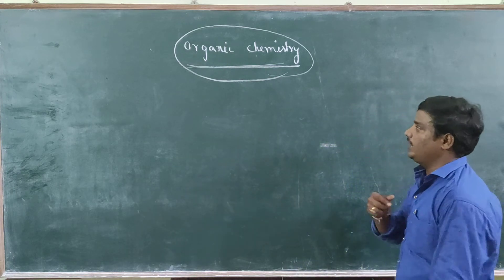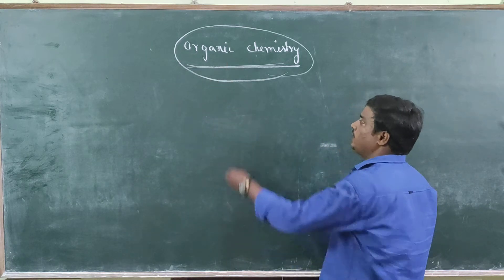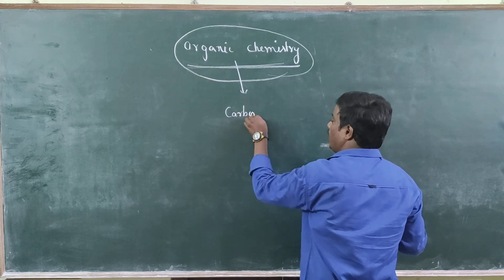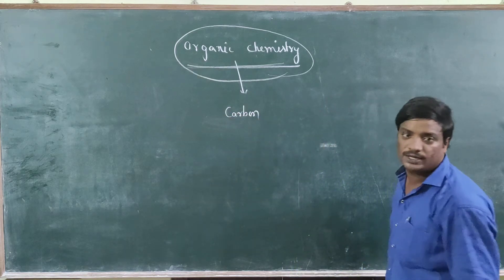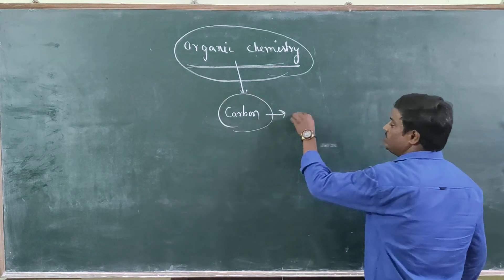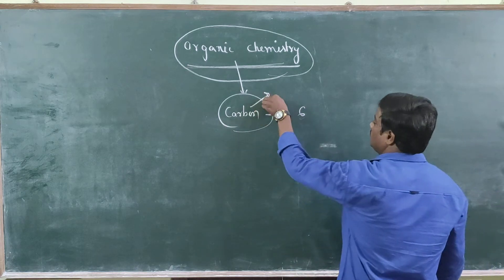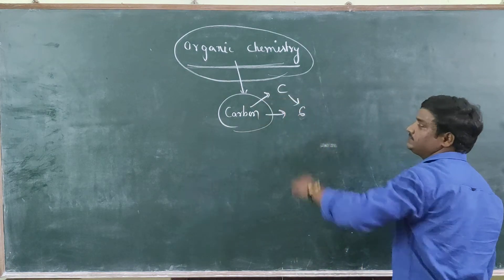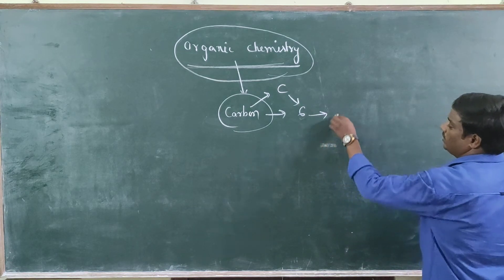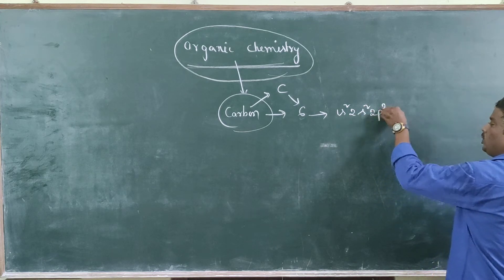In short, we are going to say that organic chemistry is carbon chemistry. The first element in organic chemistry is carbon. Carbon has atomic number 6, indicated with the letter C. The electron configuration of carbon is 1s2, 2s2, 2p2.